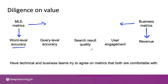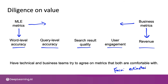One other practice I've found useful is doing even very rough back-of-the-envelope calculations to relate word-level accuracy to business metrics. For example, if word-level accuracy improves by 1%, will that improve query-level accuracy by maybe 0.7% or 0.8%? And how much will that improve search result quality, user engagement, and maybe revenue? These are sometimes called Fermi estimates — you can read about this on Wikipedia. Even crude estimates can help bridge machine learning engineering metrics and business metrics.